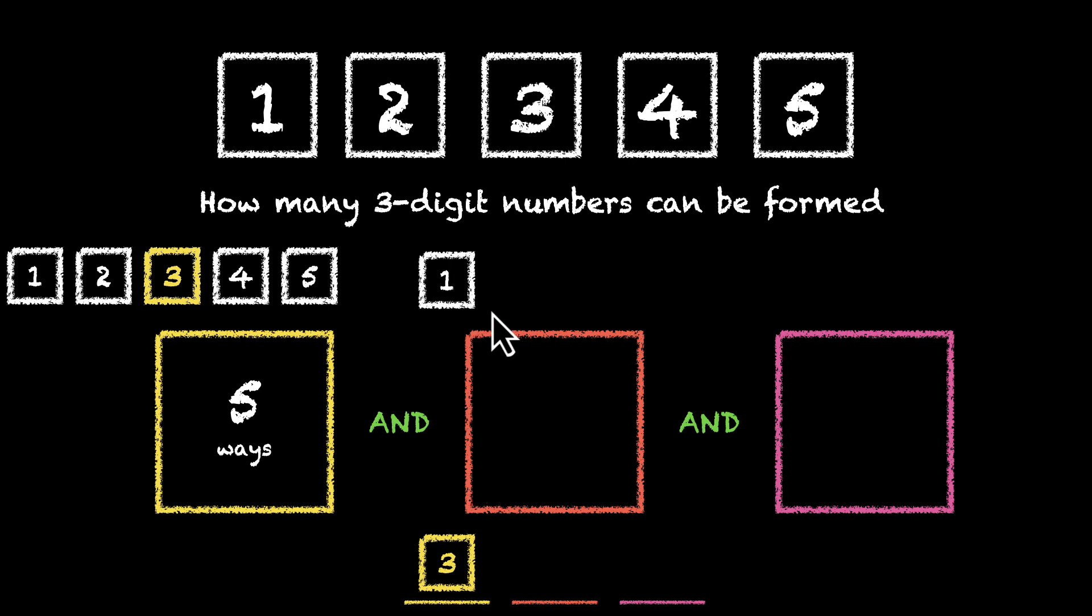And now we are filling this orange box. How many options does this orange box have? Well, it has 1, 2. It doesn't have 3 because 3 is gone. So 4 and 5. This box has only 4 options. So how many ways to do this part of the job? That's 4 ways. Let's say we picked 1 for this box. So 1 is also gone.